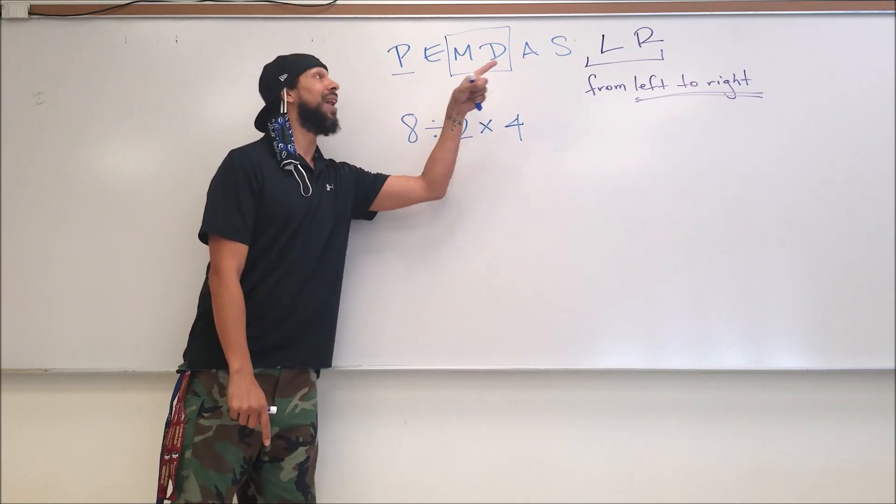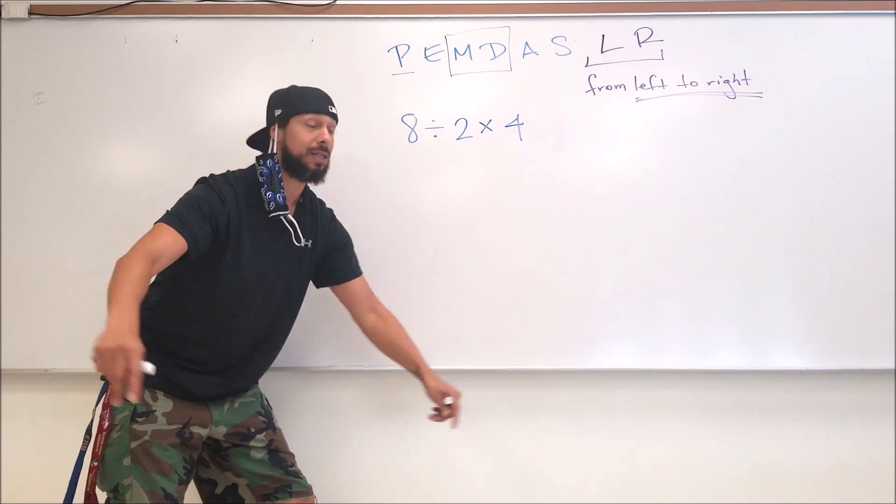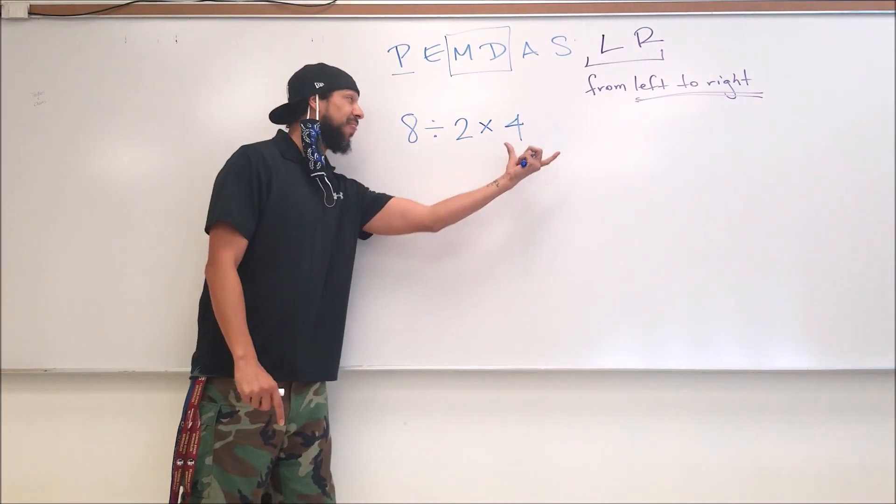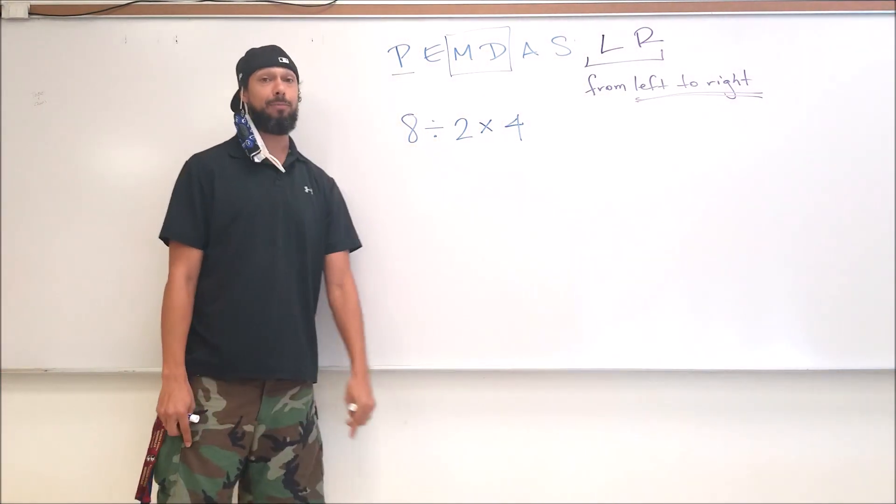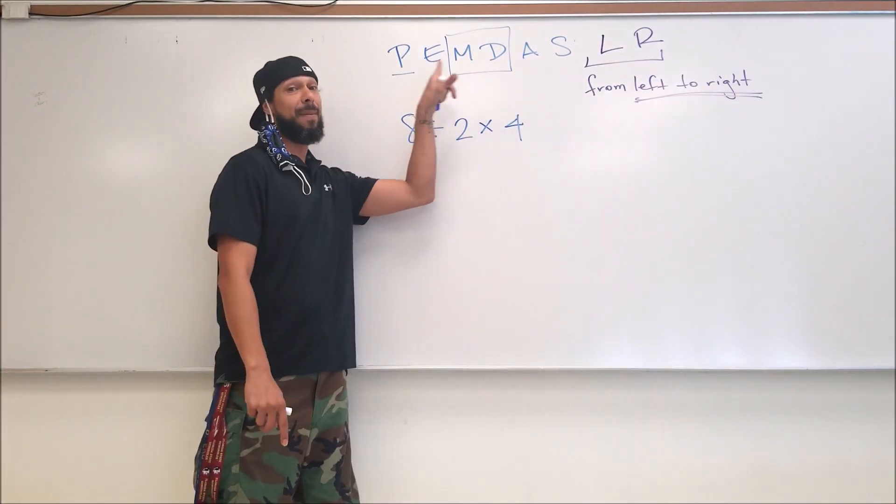You do not multiply and then come back to the beginning and divide. You don't do that. You multiply and divide in the same step at the same time, whichever comes first from left to right.